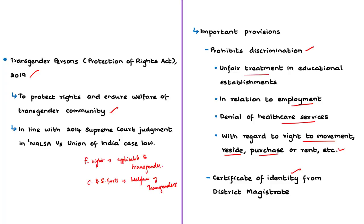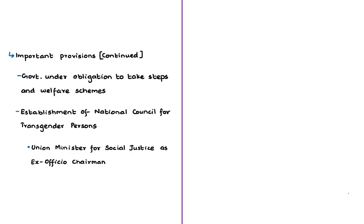In case of a minor child, the application for identity certificate can be made by the guardian of the child. The government is under obligation to make adequate steps and welfare schemes to ensure full and effective participation of transgender persons and their inclusion in society. Every educational institution funded or recognized by the government shall provide inclusive education and opportunities in sports, recreation, and leisure activities to transgender persons without discrimination.